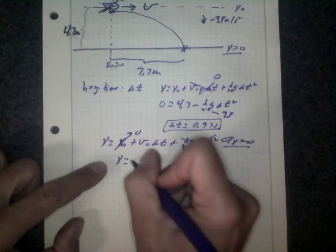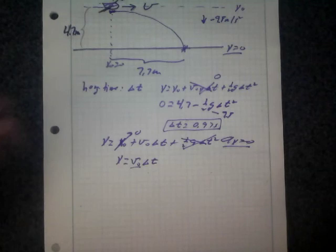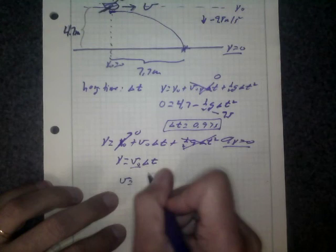X equals v0 times delta t. And remember where v0 is the initial speed of the fish, which is the initial speed of the pelican. So this v0 here is that v that I'm trying to find of the pelican. So we can just solve for that here. It's going to be x over delta t.